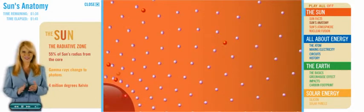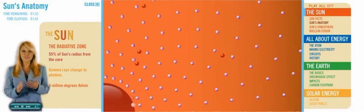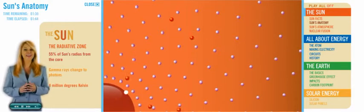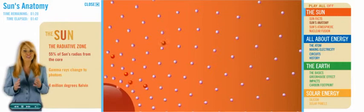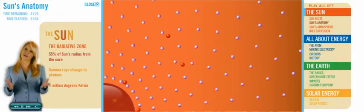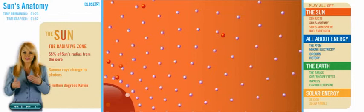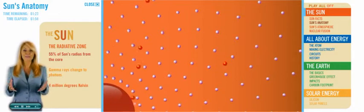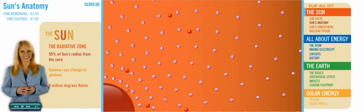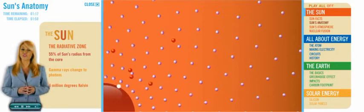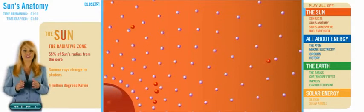They move at the speed of light, but constantly bump into so many other particles along the way that it takes hundreds of thousands of years for them to get through. Think of a pinball machine and all of those bumpers and flippers, and then you multiply that by a billion and you get the idea. The average temperature in the radiative zone is 4 million degrees Kelvin.